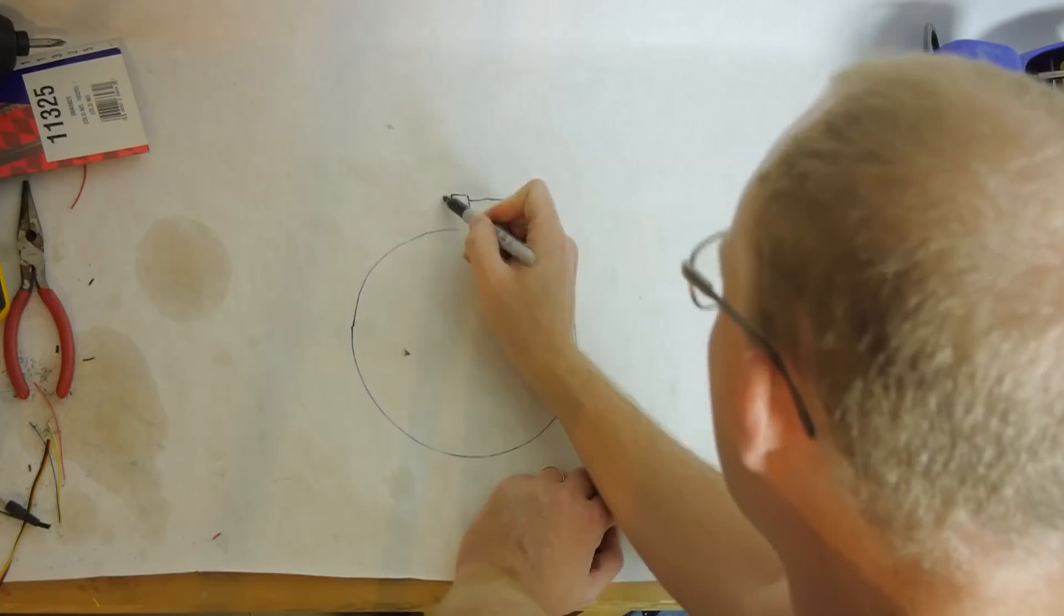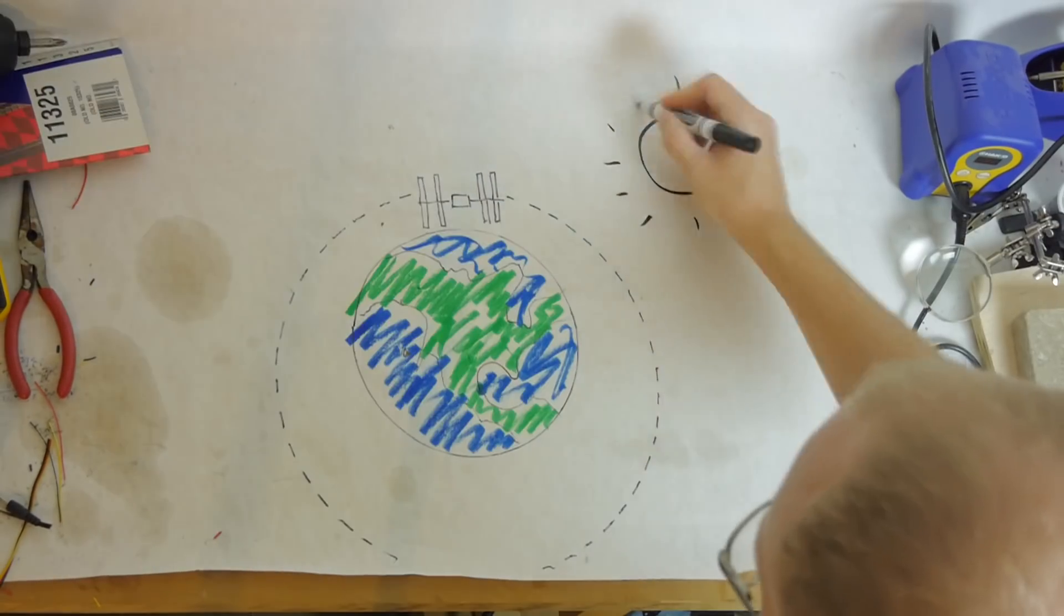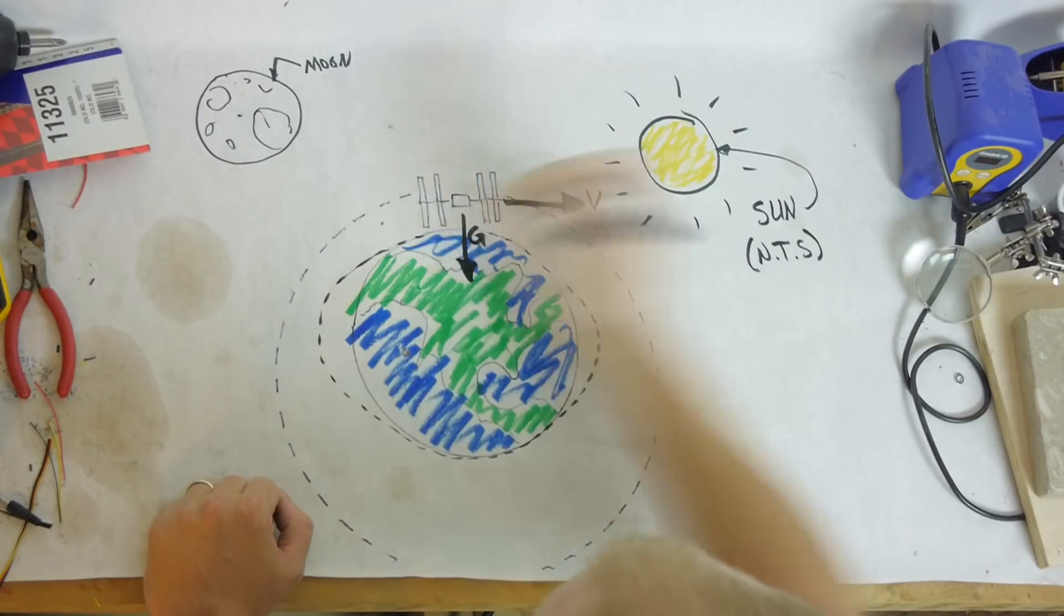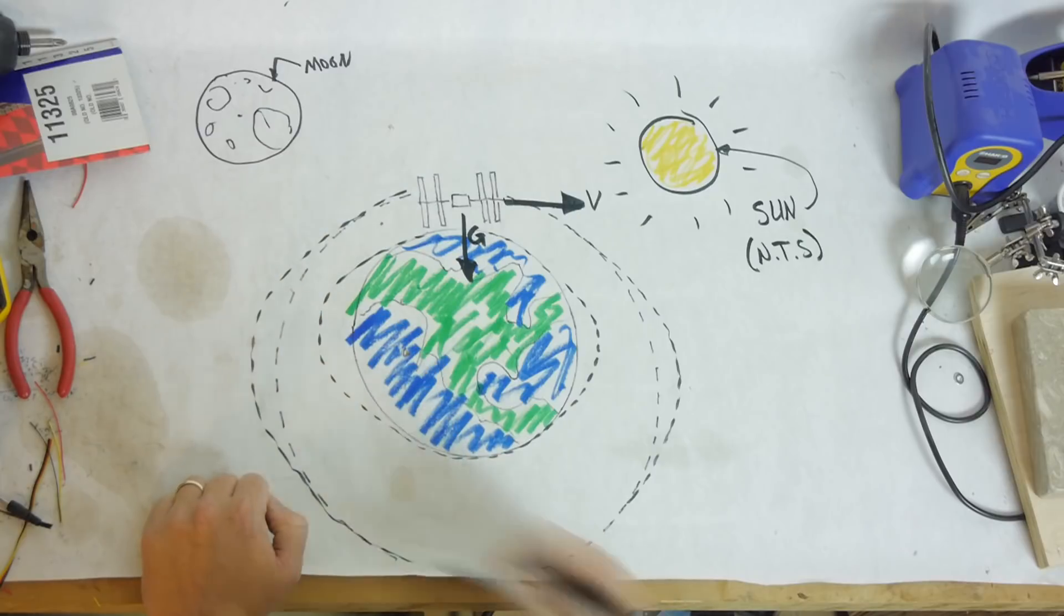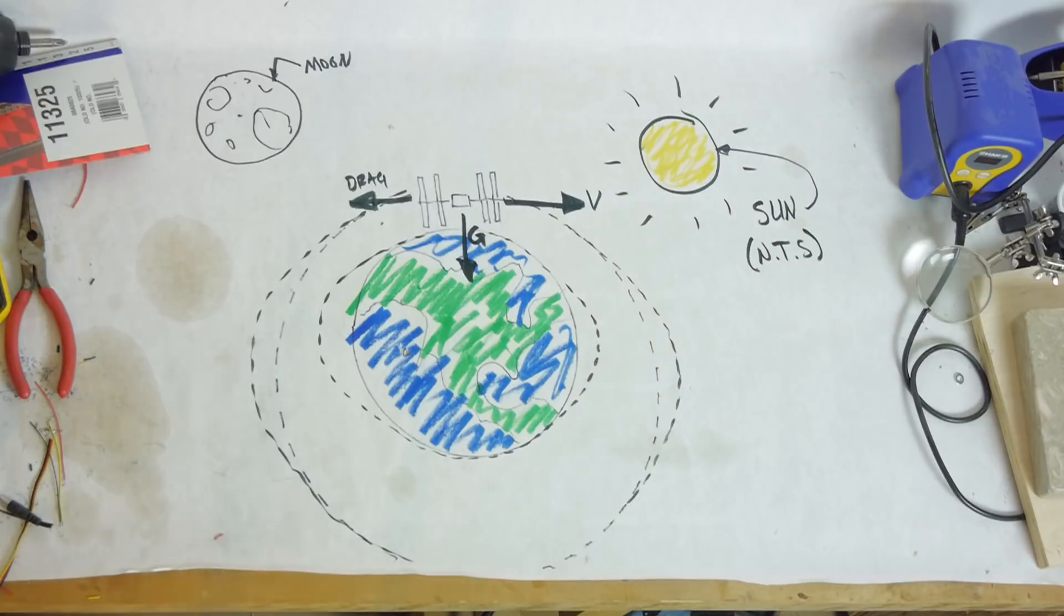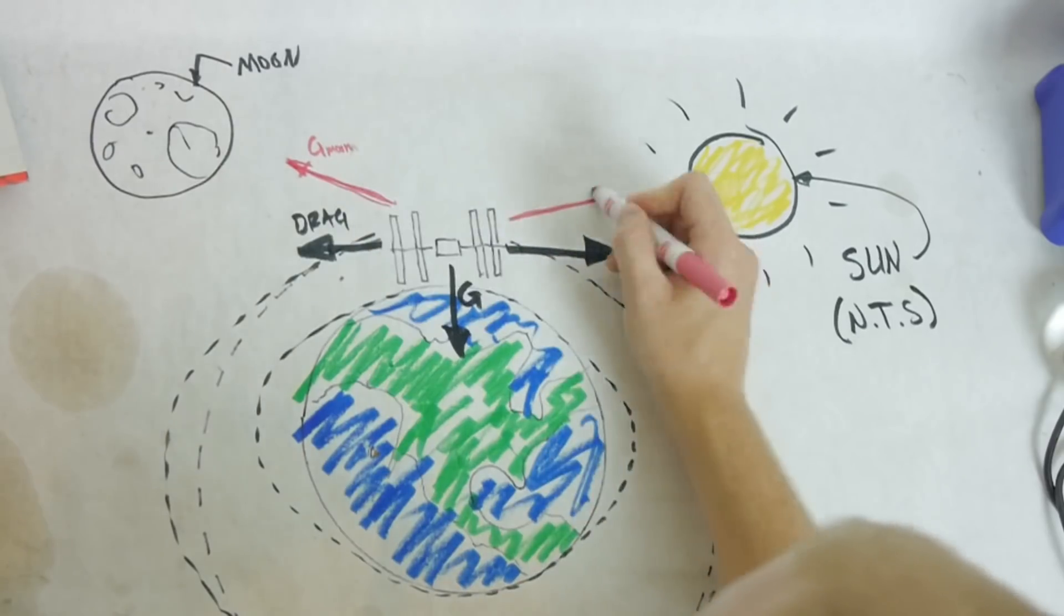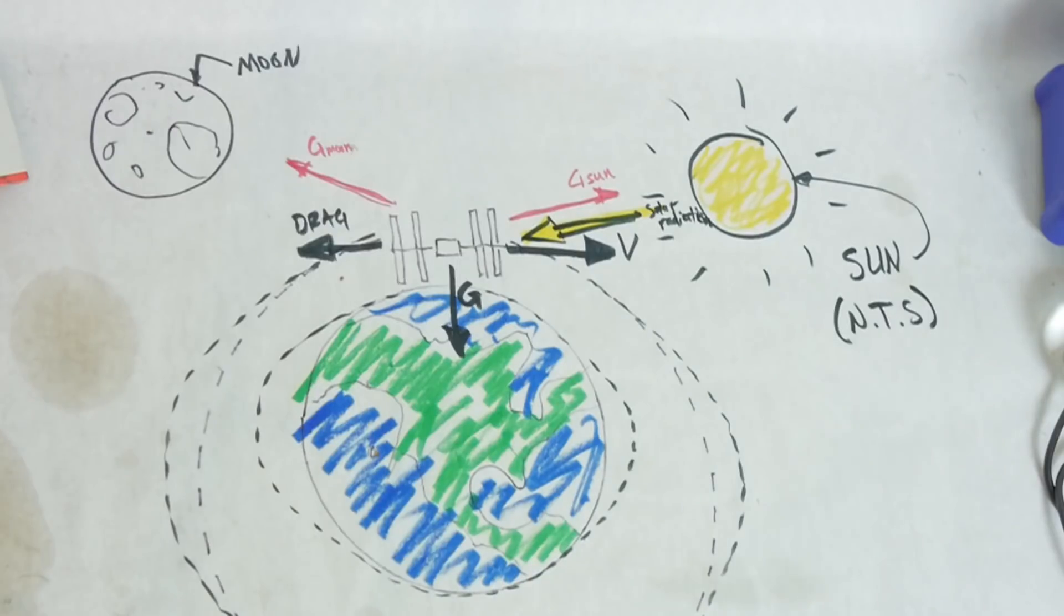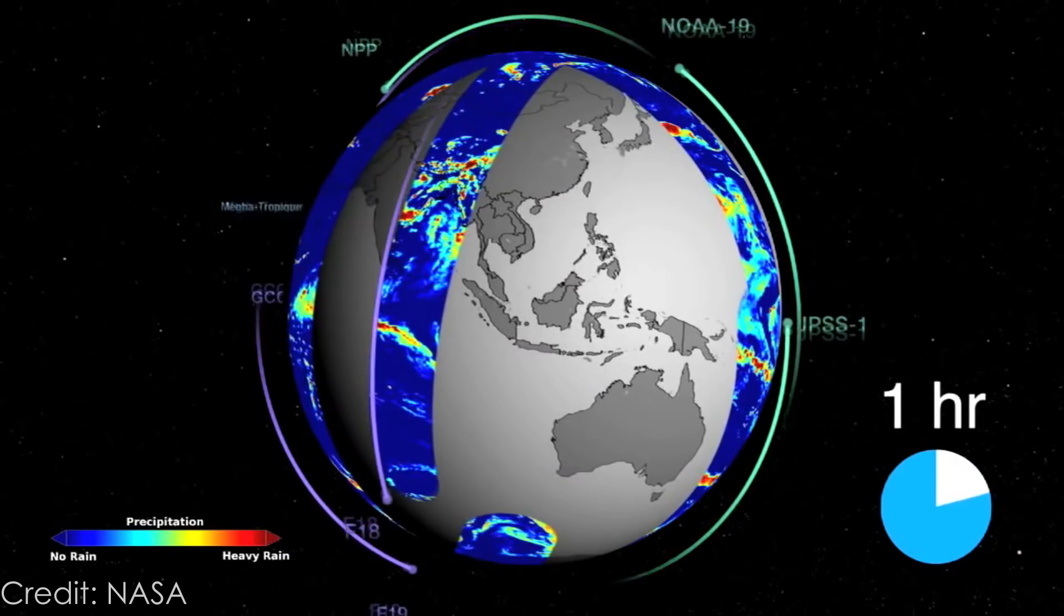Satellites orbiting the Earth are affected by variations in Earth's gravity due to its not-quite-spherical shape, drag from the tenuous outer atmosphere, gravity pulling from the moon and the sun, and even solar radiation. These are collectively known as orbital perturbations.